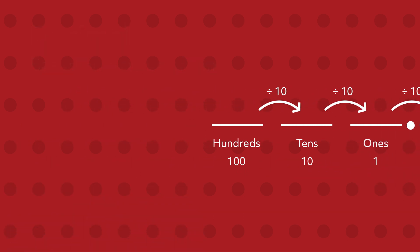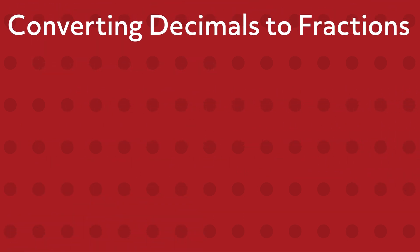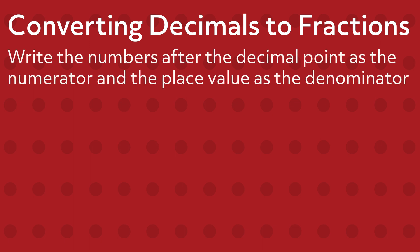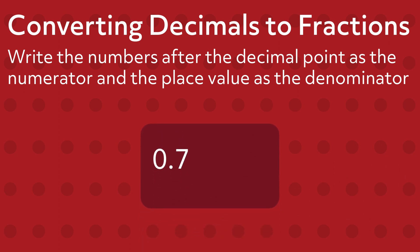Since decimals contain fractional parts, they can also be written as fractions. Changing a decimal into a fraction is just a different way of expressing the same number. To convert a decimal into a fraction, write the numbers after the decimal point as the numerator, and the place value as the denominator. For example, in the number 0.7, there is a 7 in the tenths place.